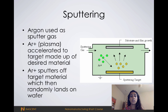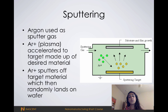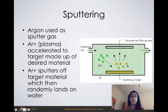Plasma is otherwise known as a gas that has a charge to it. We take our ionized gas, or plasma, and direct it at our desired material. In this example, we've shown gold.